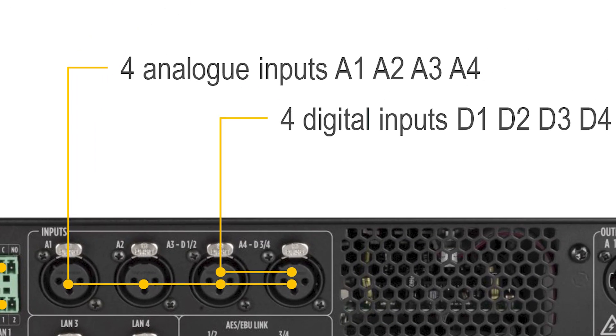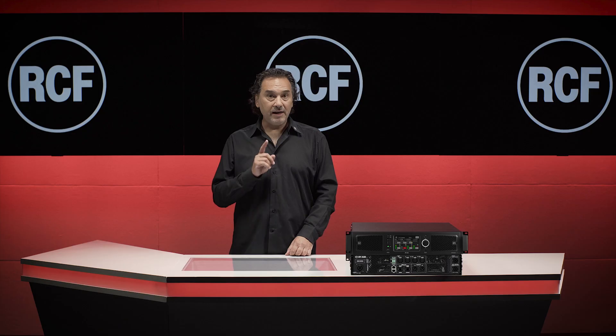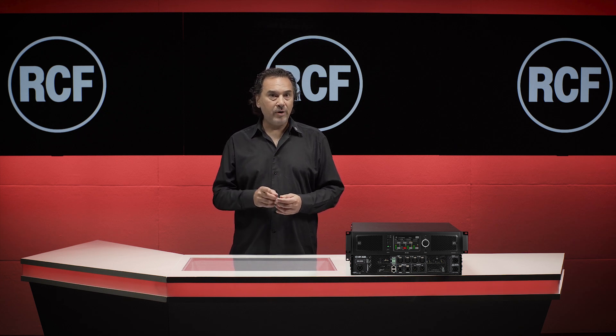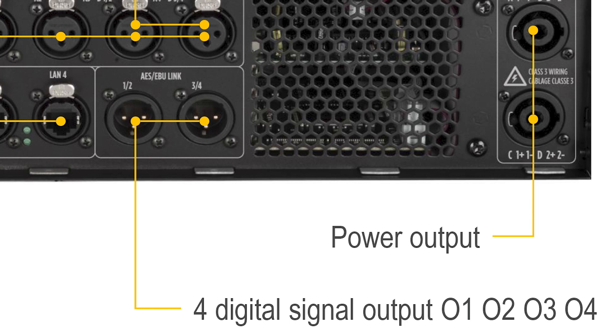There are four XLR analog inputs, with channels 3 and 4 which can also be set for AES/EBU digital inputs. Also, four latency-compensated AES/EBU outputs to daisy-chain the following XPS units. The latency is really low — we are talking about 4 samples at 96kHz — and it is compensated.